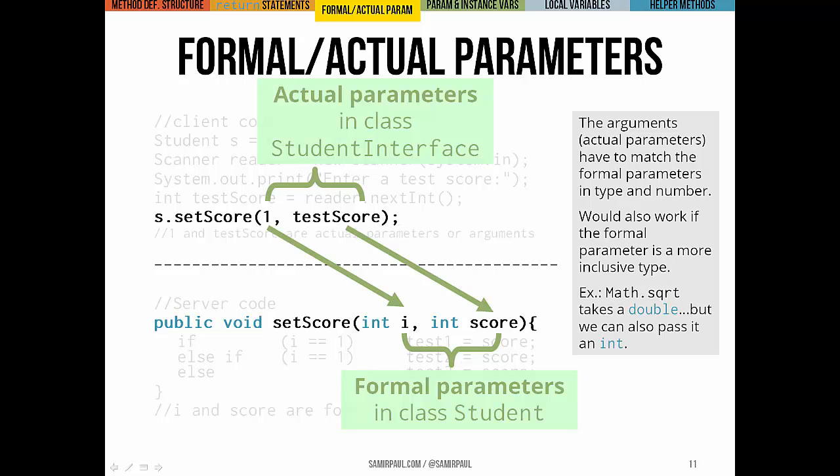Last note, when a method has multiple parameters, you've got to give the right number and the right type of parameters in the right order. So the actual parameters or the arguments have to match the formal parameters in both position and type. The types have to either be the same or less inclusive than what's asked for in the parameter.